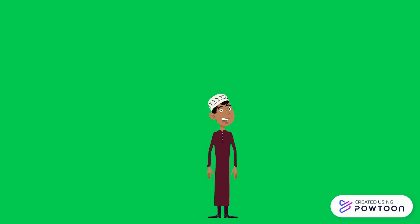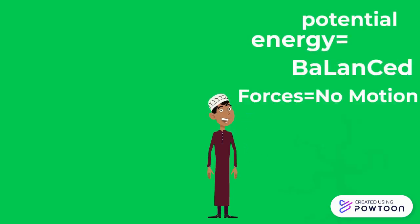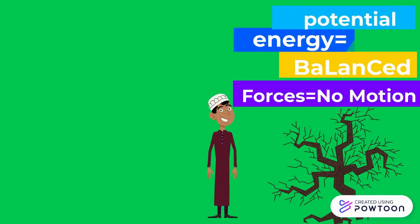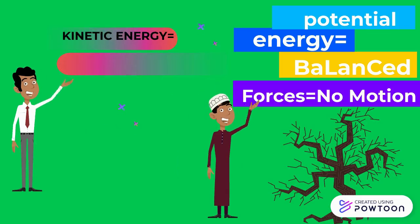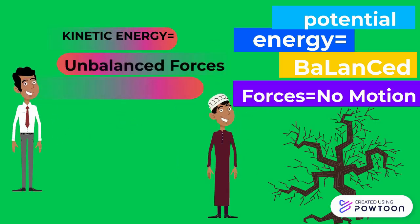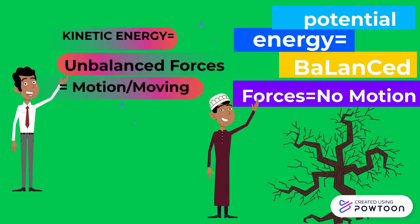Potential energy is a balanced force. That means there's no motion, like this tree. Kinetic energy, which is an unbalanced force, means you're in motion or you're moving.